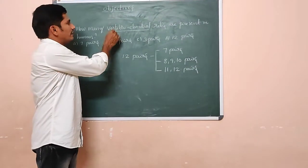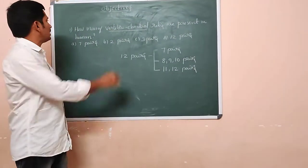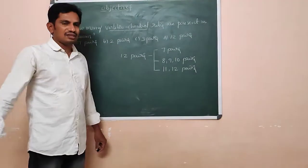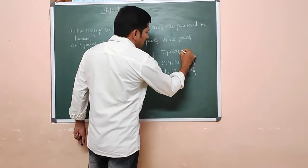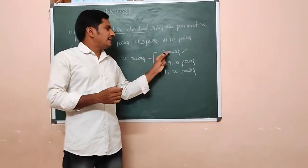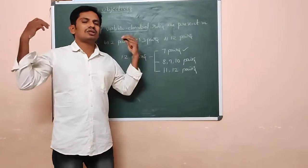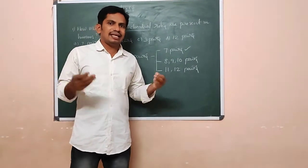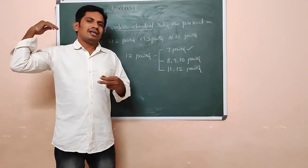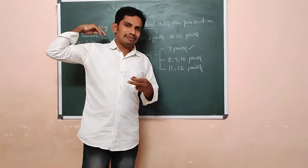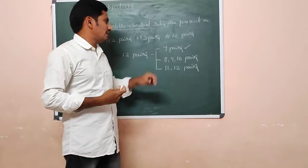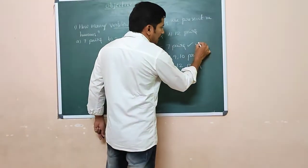Now our objective is vertebrochondral ribs - how many vertebrochondral ribs? First you should know, these 7 pairs are the true ribs. Dorsally and ventrally, they attach to the vertebral column and the sternum respectively. That's why these are called the vertebrosternal ribs.